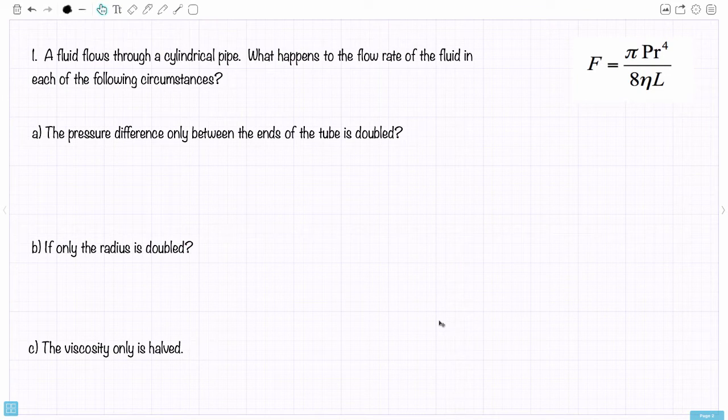First question. If a fluid flows through a cylindrical pipe, what happens to the flow rate of the fluid in each of the following circumstances? Question A: The pressure difference only between the ends of the tube is doubled. If I doubled the pressure difference, what happens to the flow rate? Well, I could say I expect the flow rate to increase, but I could be a little bit more precise.